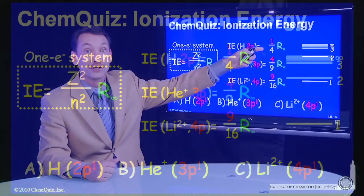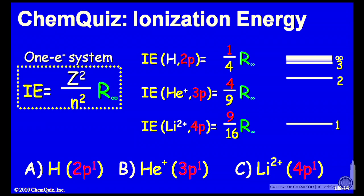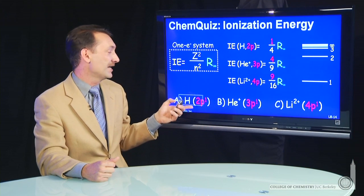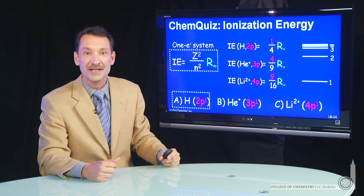The easiest to ionize, though, the lowest energy is a quarter of a Rydberg for hydrogen. So of these three, hydrogen is the easiest to ionize from its 2p state.